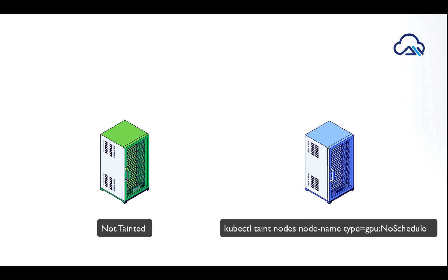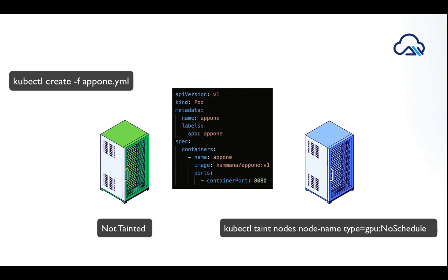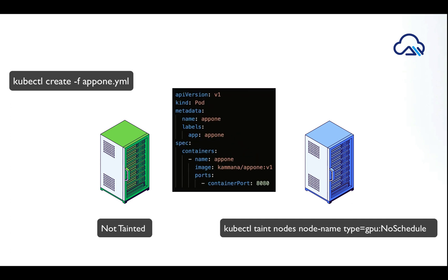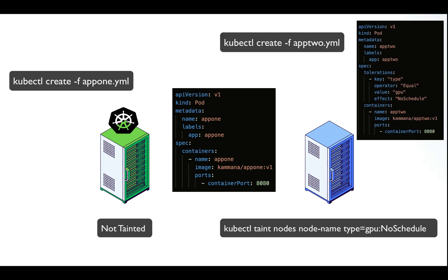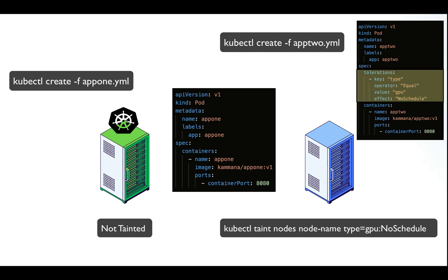Now let's deploy application 1. This application is not configured with tolerations, so it cannot be deployed on the blue node — this workload gets deployed onto the green node. Now let's deploy application 2, and if you see the config file it has tolerations declared which are matching the taint of the blue node.